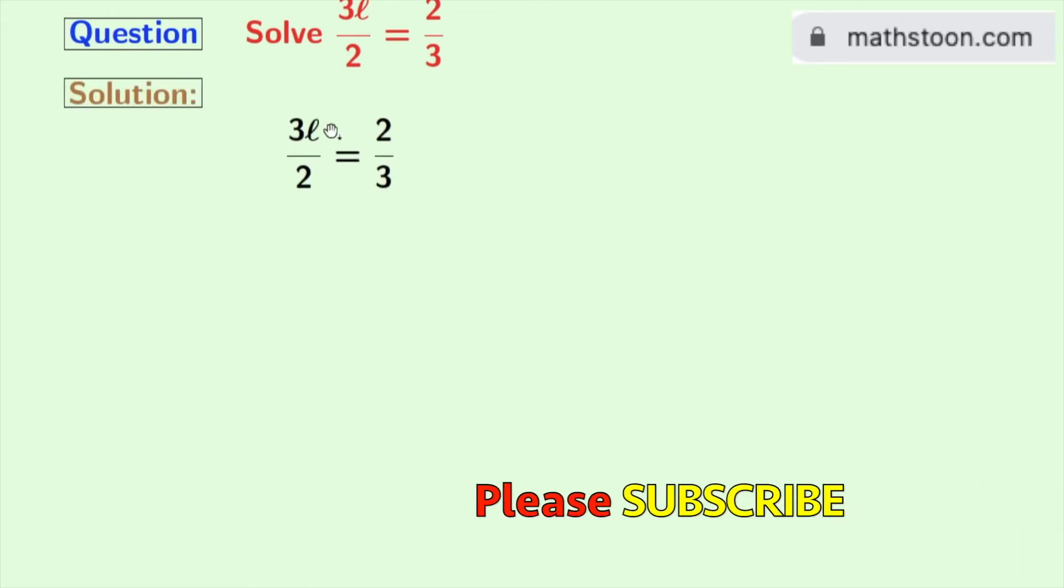This is our given equation. Now after cross multiplying, we get 3L times 3 is equal to 2 times 2.